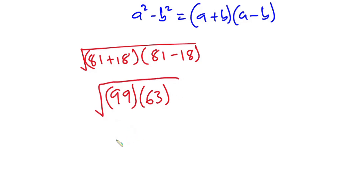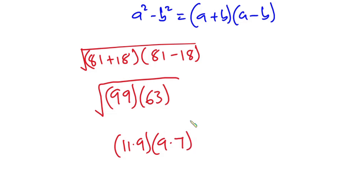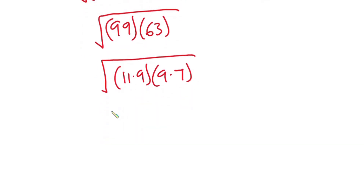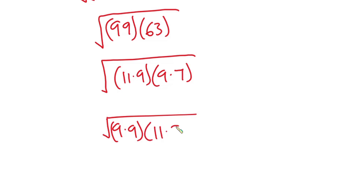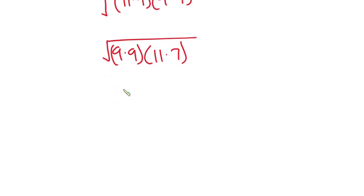Now, 99 is the same as 11 times 9, and 63 is also the same as 9 times 7. So this can also be written as the square root of 9 times 9 times 11 times 7.